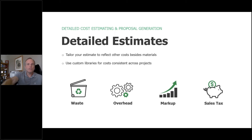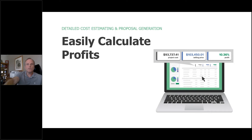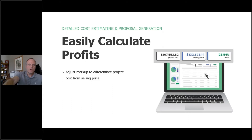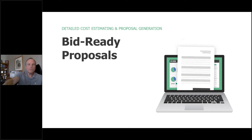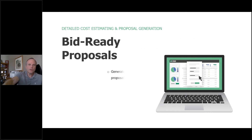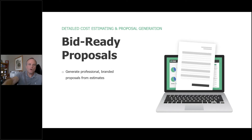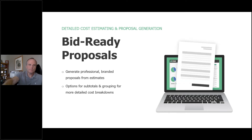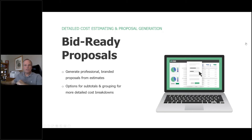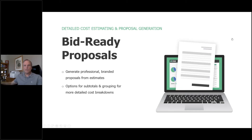Once you've established all this information, you can start to understand what type of profit you're going to have on the project — using markups to differentiate your selling price, and visualizing that percentage of profit, cost, and price. What you can then do is create a bid-ready proposal with your logos, created specifically for your client, with all the right branding, subtotaling, grouping, and detailing. With that, we're going to turn it over to Troy to show you in the product how this operates.